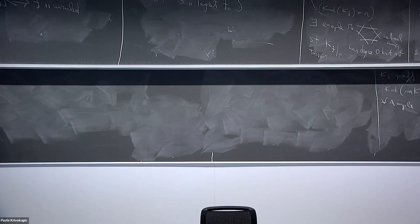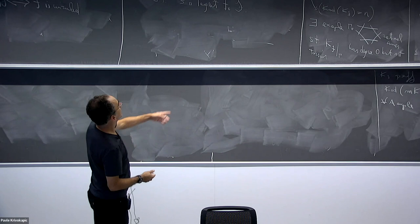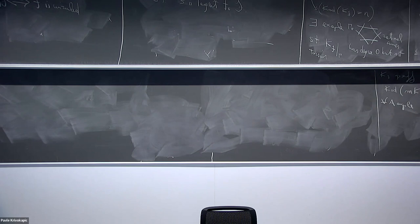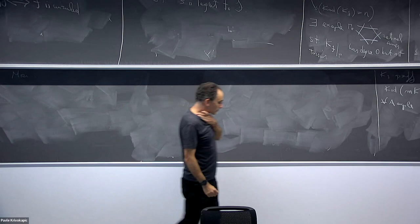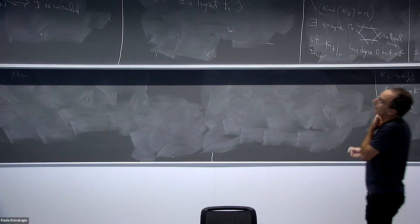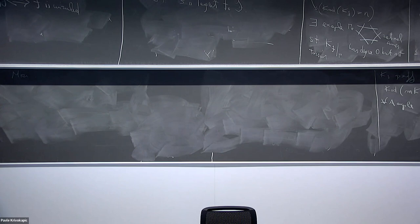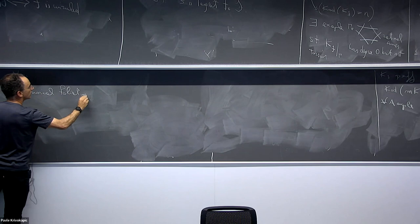For m greater than or equal to 3, for varieties we had to wait for Mori. So the first thing Mori did: suppose we start with a canonical foliation such that KF is not nef. If KF is nef there is nothing to do — we have already arrived at the output.